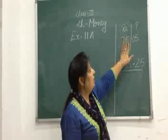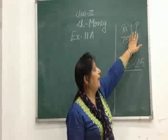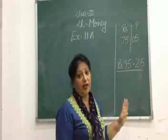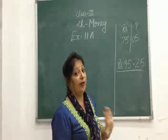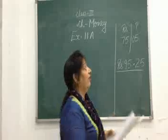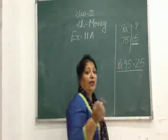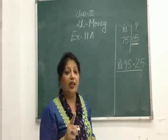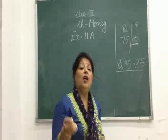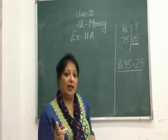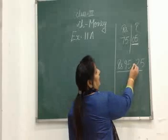For example, 75 rupees and 5 paisa — we will not write just 5, we will write 05. Paisa में हमेशा 2 digits write करने हैं. अगर पैसा नहीं दिया हुआ rupees के साथ, तो हमने 00 पैसा लगाना हैं. And one point about writing.